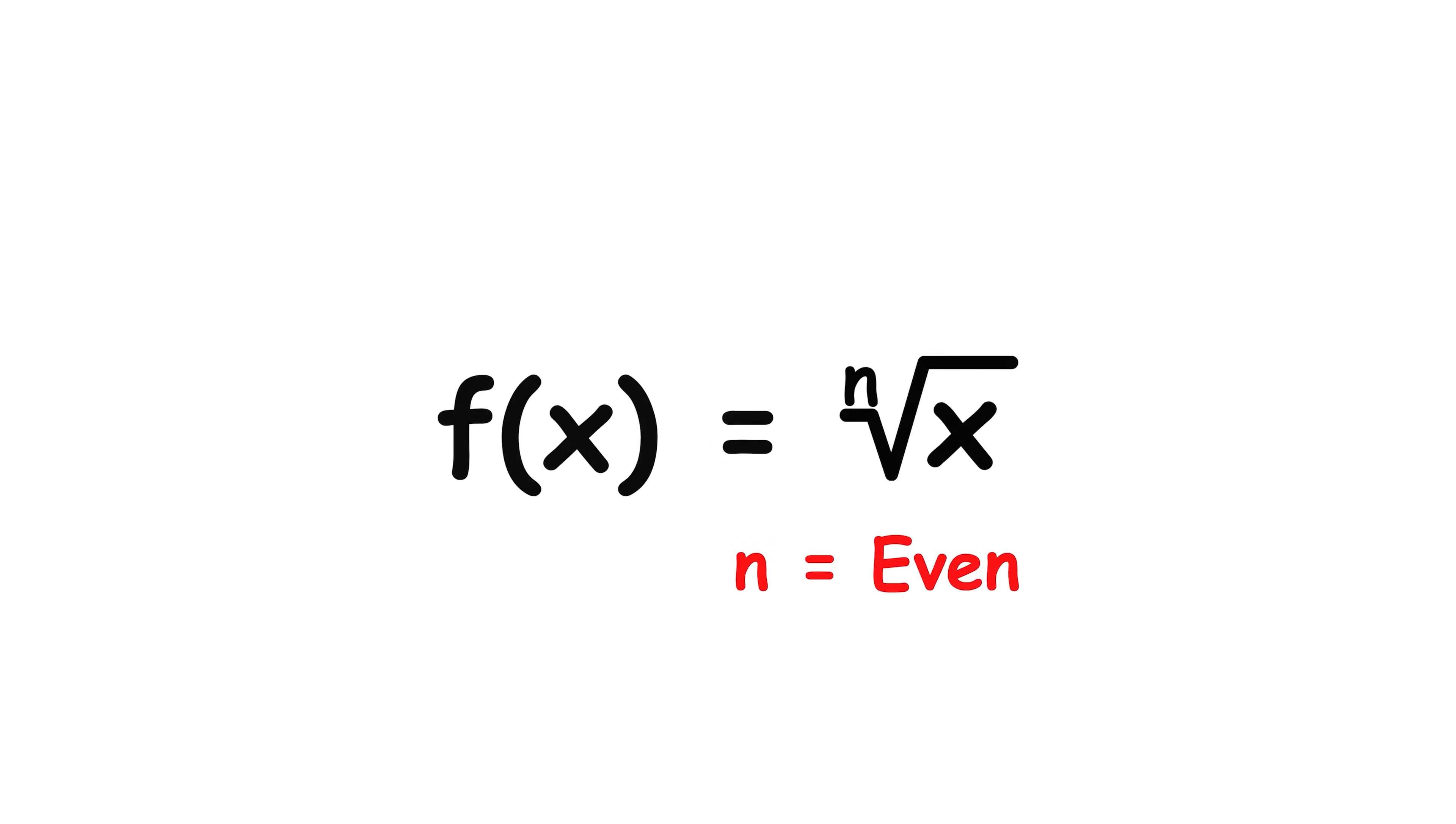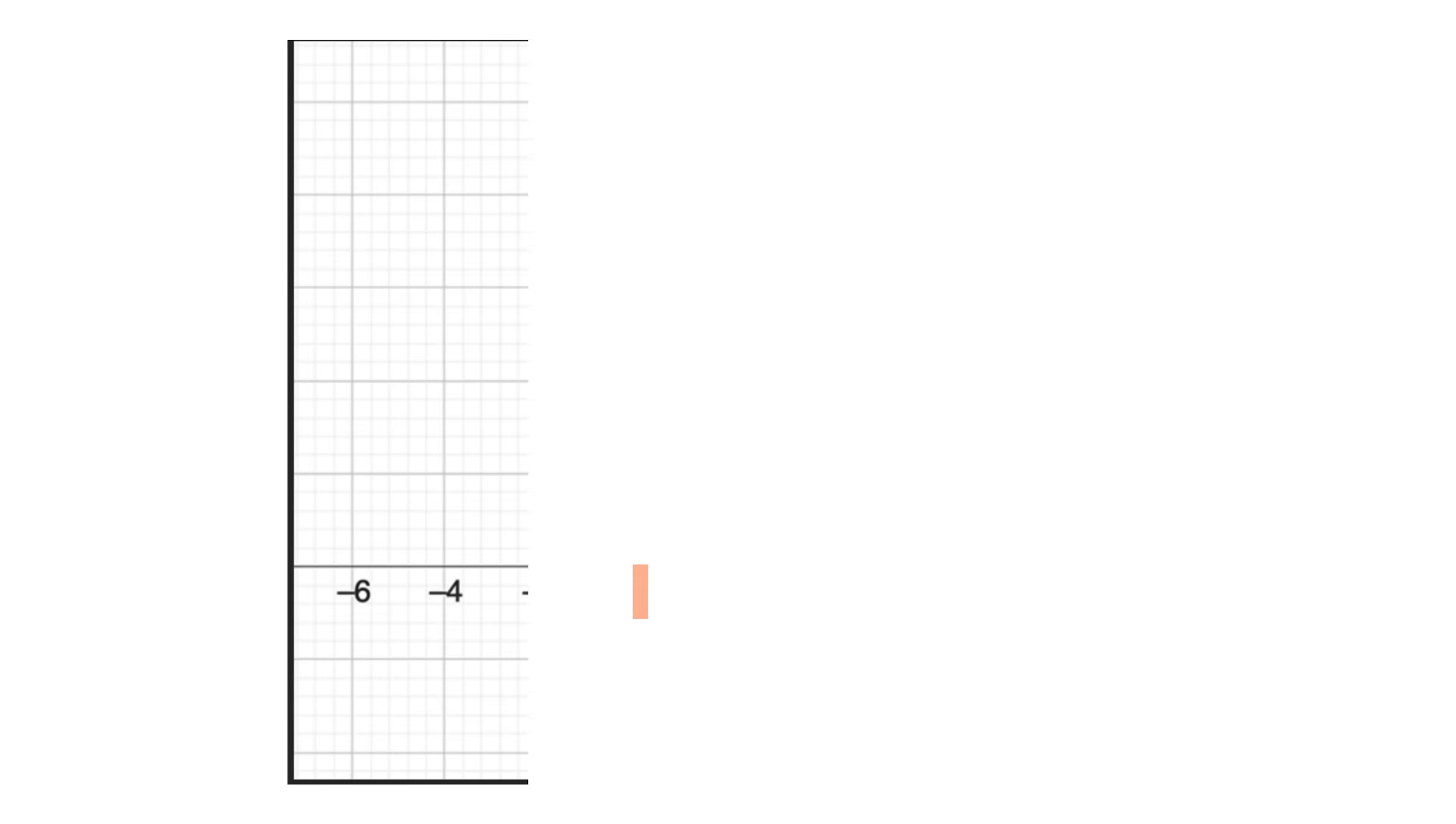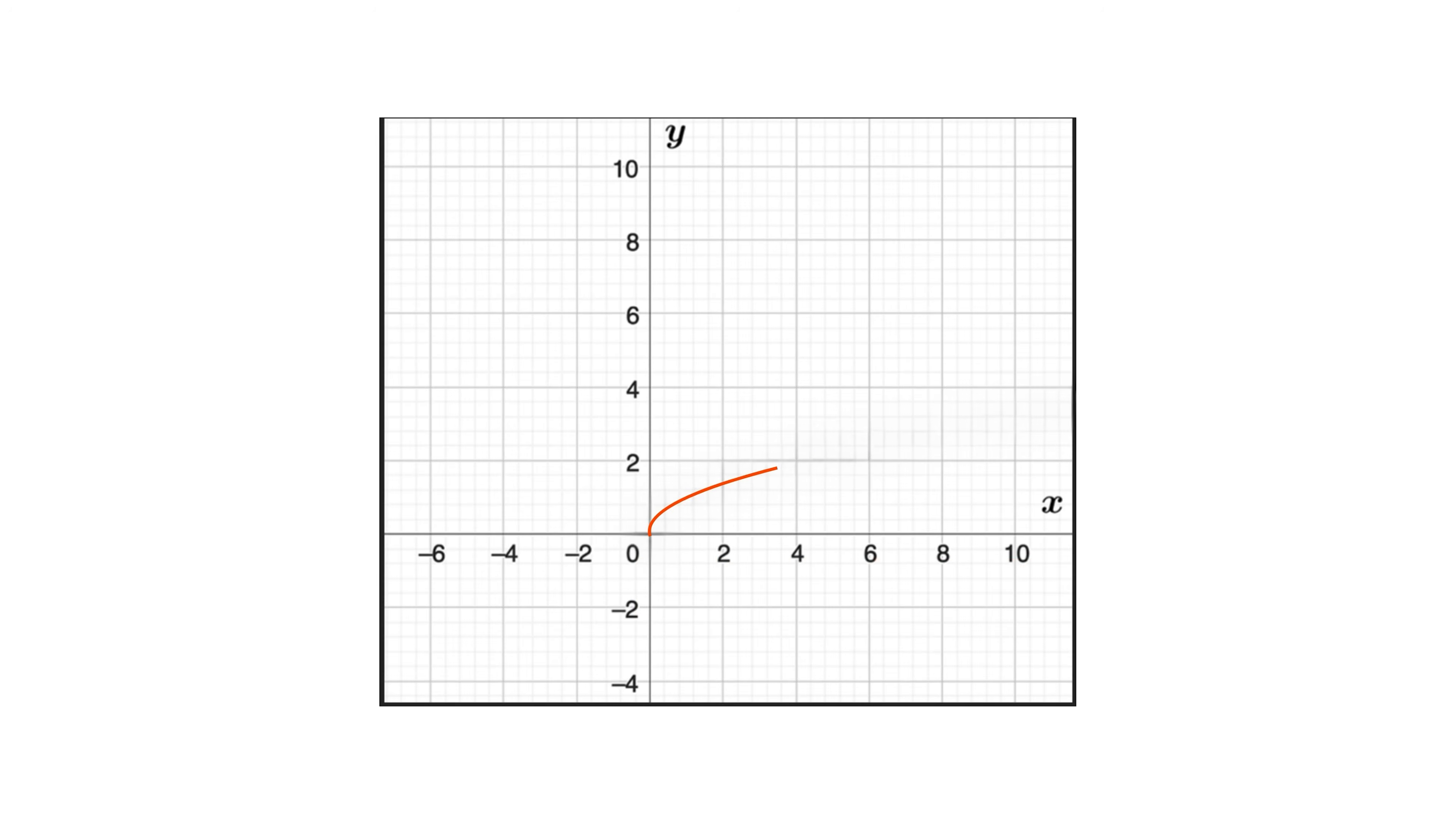If the index is even, the domain is restricted to values that do not produce negative radicands. Its graph starts at a defined point and grows slowly, with a smooth curvature to the right.